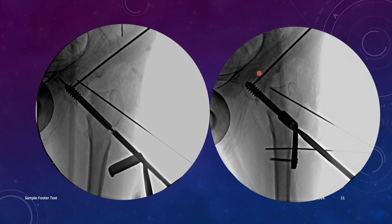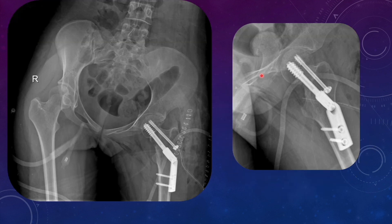We are now confident that the trabecular lining in the proximal and distal fragments is almost parallel. To add more stability, a derotation screw was inserted parallel to the dynamic hip screw in the relatively unoccupied superior quadrant.